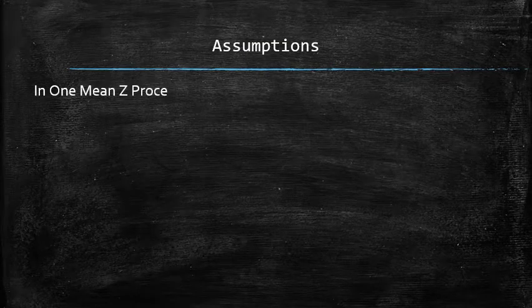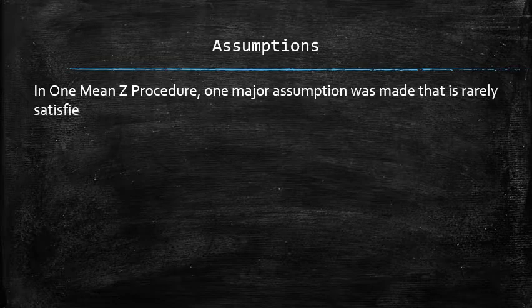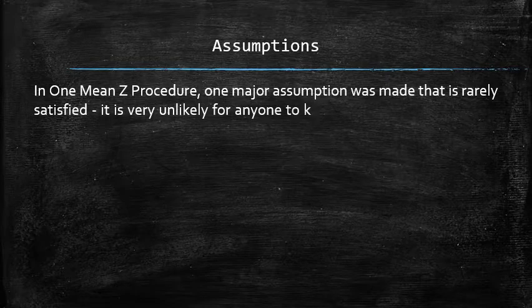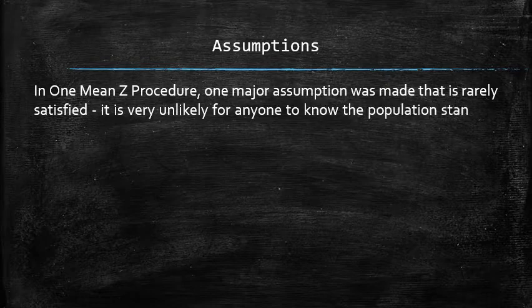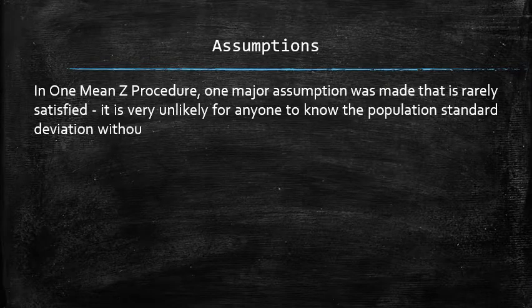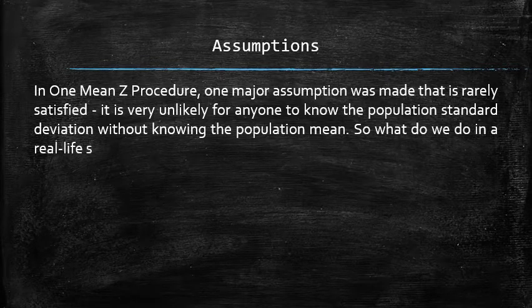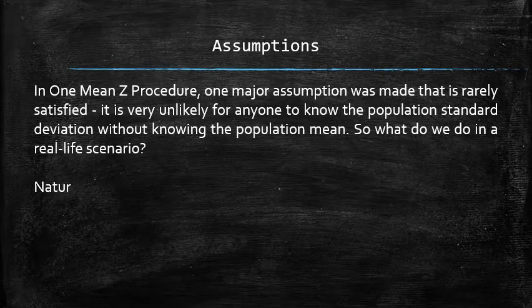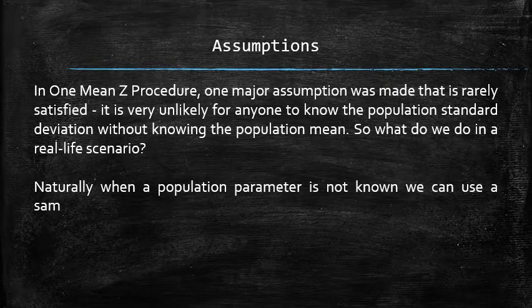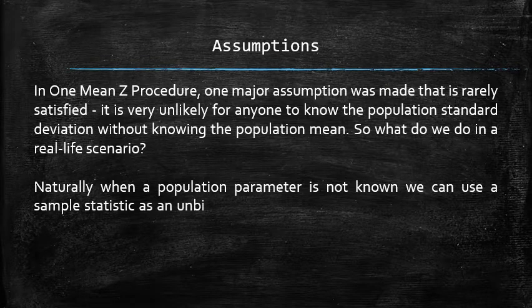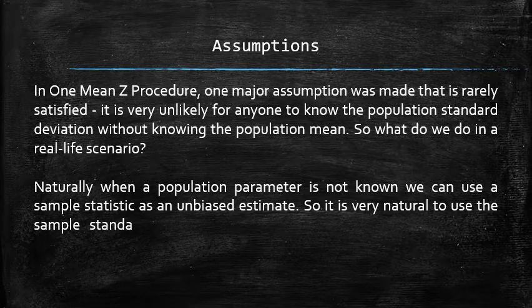In one-mean z procedure, one major assumption was made that is rarely satisfied. It is very unlikely for anyone to know the population standard deviation without knowing the population mean. So what do we do in a real-life scenario? Naturally, when a population parameter is not known, we can use a sample statistic as an unbiased estimate. So it is very natural to use the sample standard deviation s instead of the unknown population standard deviation sigma.